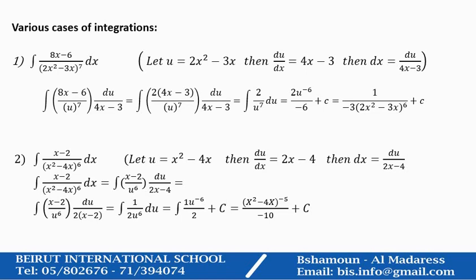We have various cases of integration. For example, we'd like to find the integration of 8x minus 6 over (2x squared minus 3x) all to power 7. Now, if you take two common factors in the numerator, you'll end up with 4x minus 3, which is the derivative of the denominator.